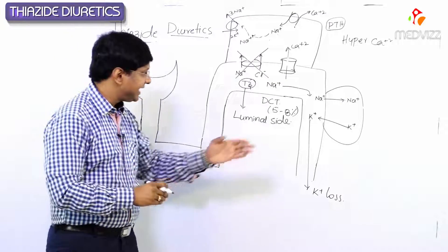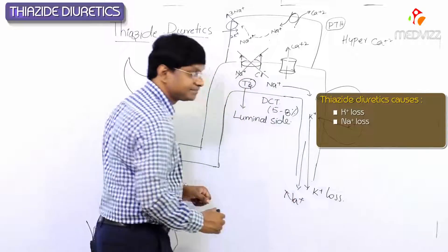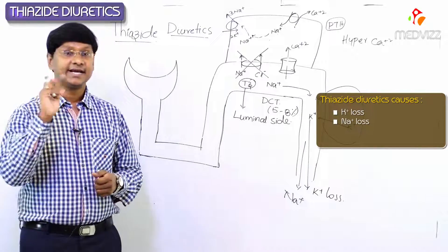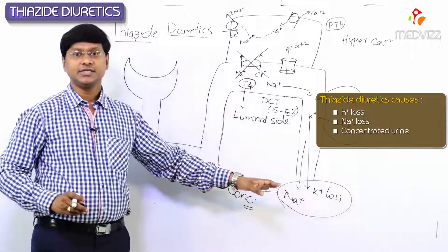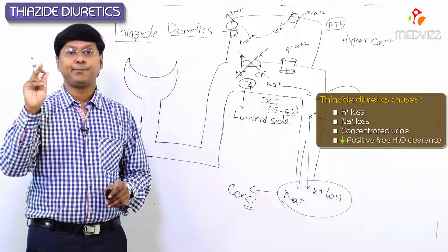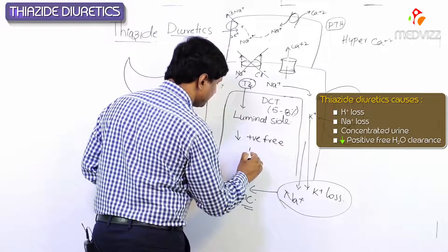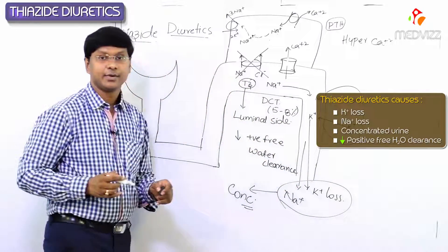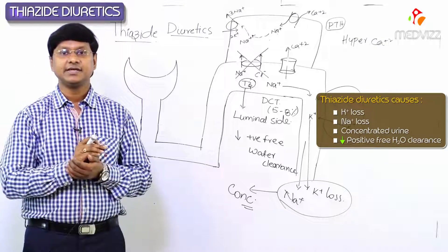Now remember: what are thiazide diuretics doing? They are excreting the solutes — causing not only potassium loss but also sodium loss. By increasing the excretion of solutes, thiazides make the urine very much concentrated. They decrease the positive free water clearance without affecting the negative free water clearance.